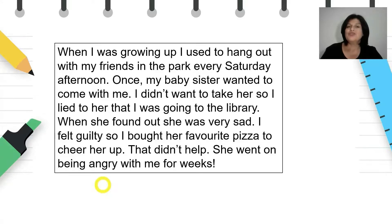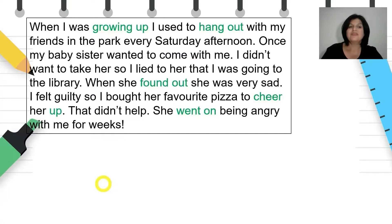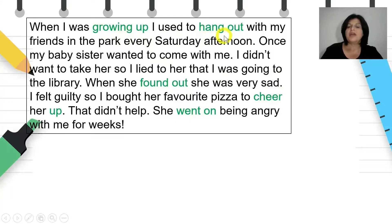Now, did you get all the phrasal verbs from this text? Let's see. All the green parts of the text are phrasal verbs: growing up, hang out, found out, cheer up, went on.